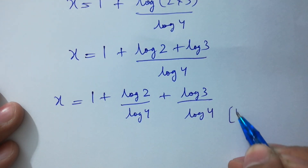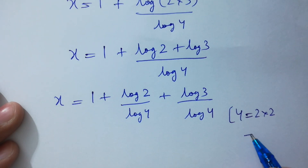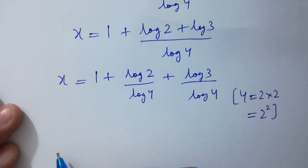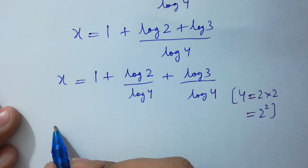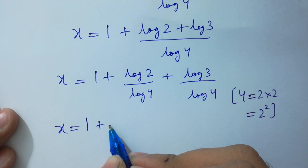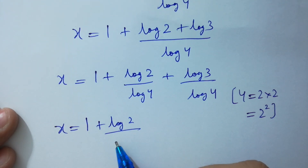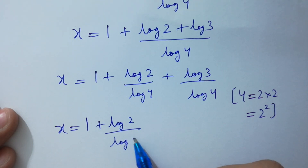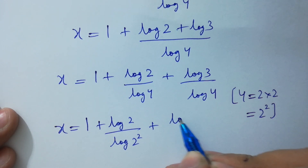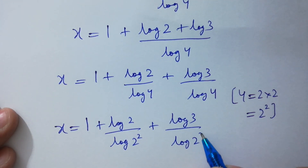Since 4 equals 2 times 2, which is the same as 2 squared, so x equals 1 plus log 2 over log 2 squared plus log 3 over log 2 squared.